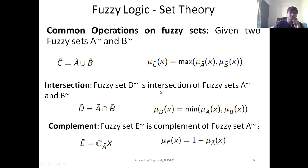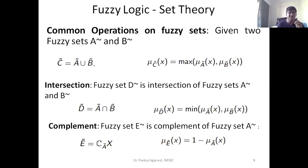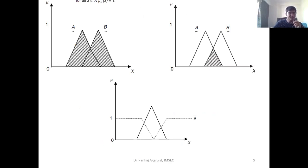This concept might look very similar to probability, but fuzziness is not the same as probability. In probability, if I have m events, the sum of probabilities of all m events would not exceed one. But in fuzzy sets, if I have the same number of m elements and fuzziness is defined for each element, the sum of those fuzzy values can achieve any value — it does not restrict itself to just one. That is the difference between fuzziness and probability.